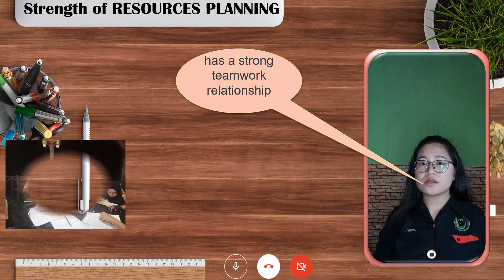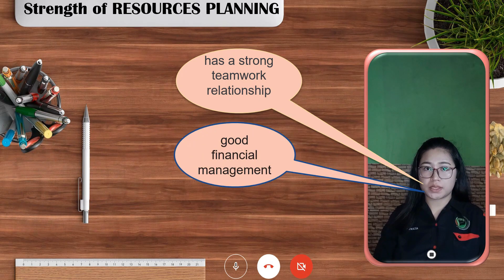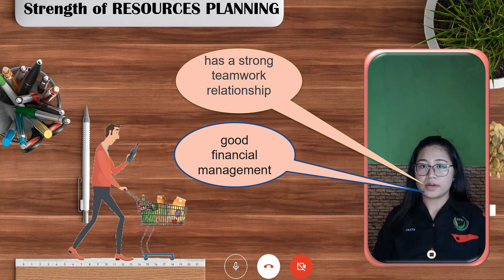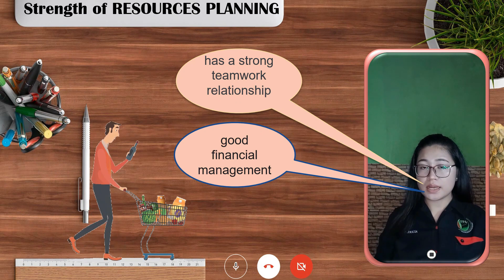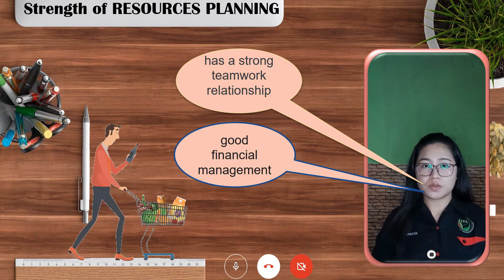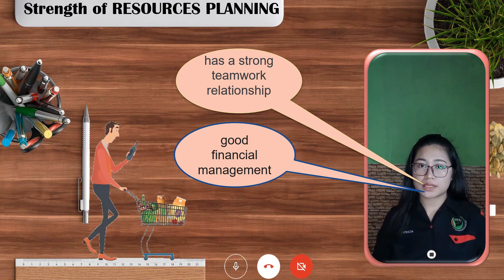Besides, this organisation has good financial management. They are able to spend based on a predetermined budget. For example, before going for an inventory trip, they already list out all the items and expenses that will be incurred during the trip. By doing this, they can avoid wastage and going over budget.